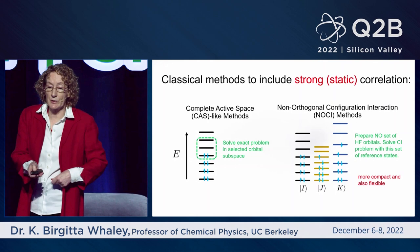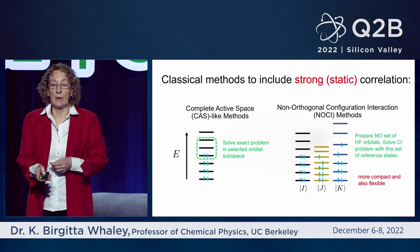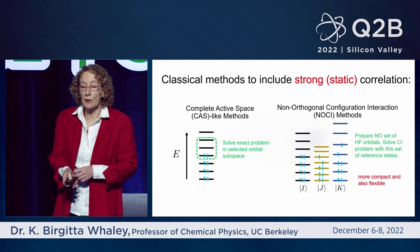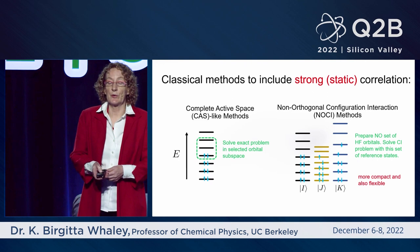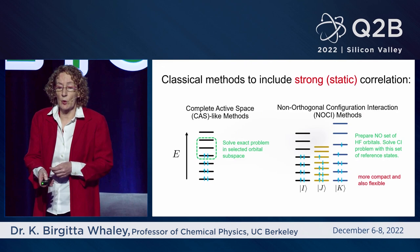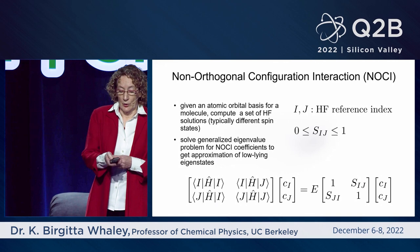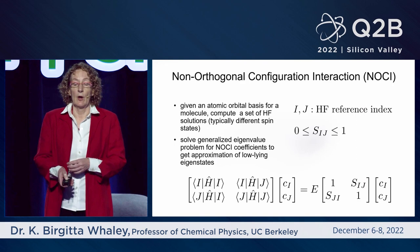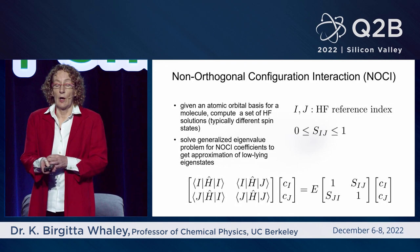The classical NOCI method prepares a set of mean field Hartree-Fock states — represented here by staircases showing where electrons pair into different energy levels — then solves a linear algebra CI problem with this set of reference states. One constructs the Hamiltonian matrix between these different reference states, calculates the overlaps, and solves the linear algebra problem.